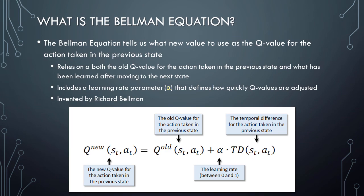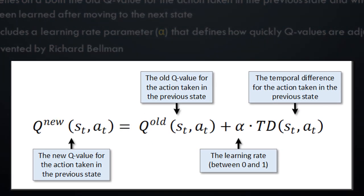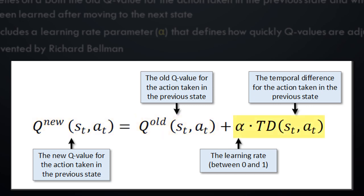Let's take a look at the Bellman equation itself. As you can see, the equation is quite straightforward. It simply specifies that the new Q value for the most recently taken action is the sum of the previous Q value for that action and the product of the learning rate parameter alpha and the temporal difference value that we calculated a few moments ago. Note that the learning rate can be any value in the range from 0 to 1, and this learning rate parameter can be adjusted during the training process as needed. Taken together, we can use the temporal difference formula and the Bellman equation to easily calculate the new Q value for the action most recently taken by the AI agent.